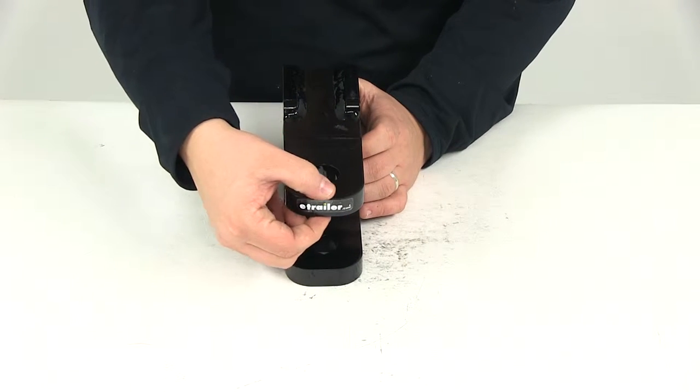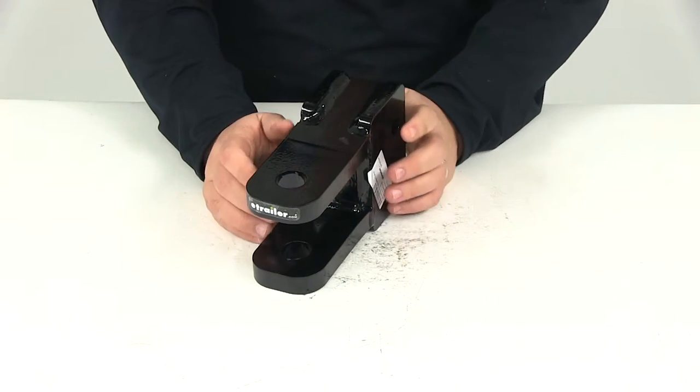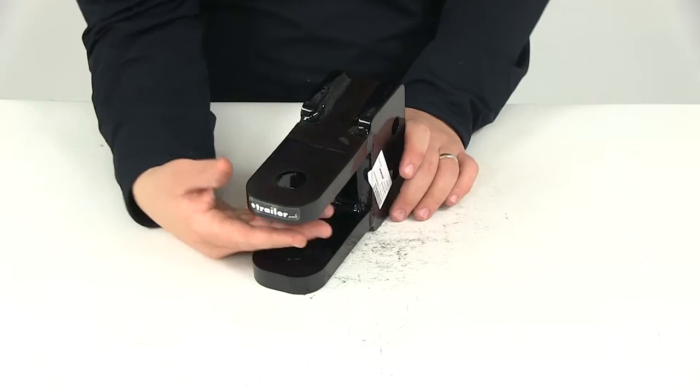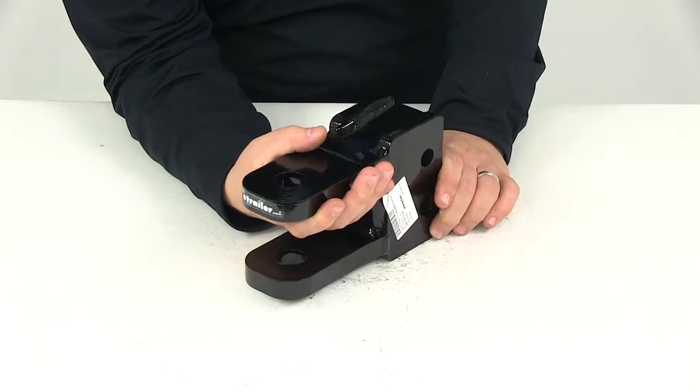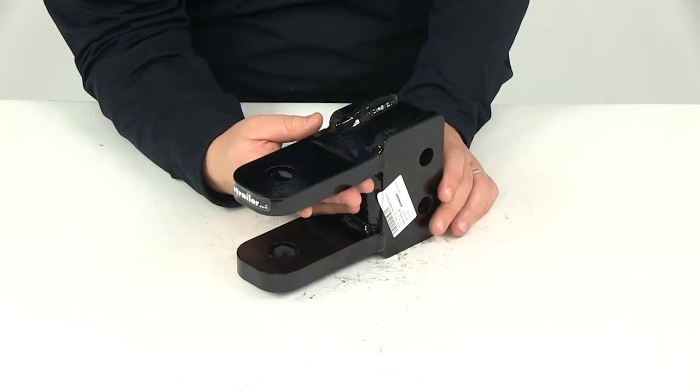The draw bar thickness, which is this portion here, is going to be three quarters of an inch. Now the adjustable channel mount is going to let you change the height of the clevis depending on your application. Channel bracket and mounting hardware are going to be sold separately.